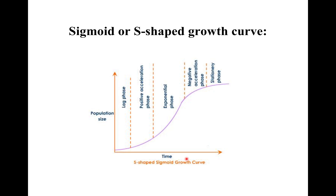The five phases of the S-shaped growth curve are: lag phase, positive acceleration phase, exponential or logarithmic phase, negative acceleration phase, and stationary phase. In this S-shaped growth curve, the population size stabilizes with minor fluctuations around its upper limit.